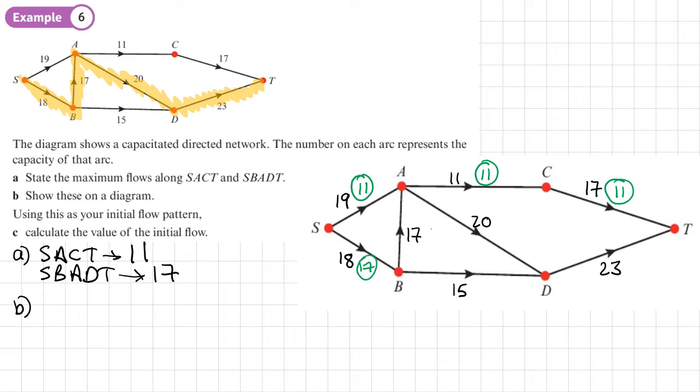SB, A, so 17 there. And then A to D, so 17. And then D to T, that was also 17 there. Now, if we've got a maximum flow of 17 along this route, that means nothing can be flowing along BD, because all 17 is going up there to A. So we need to mark this down as 0 as well.